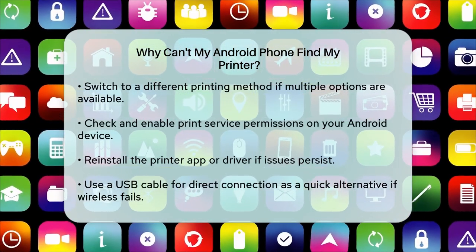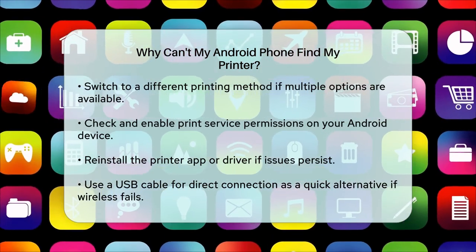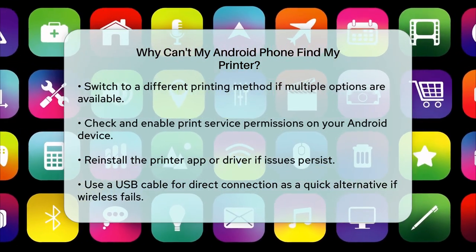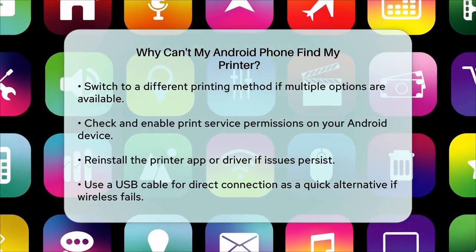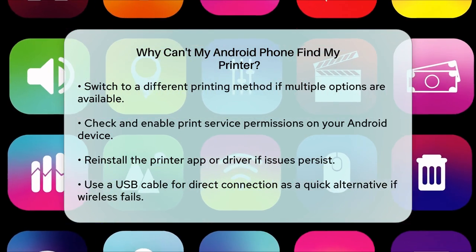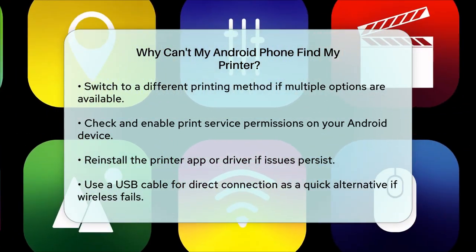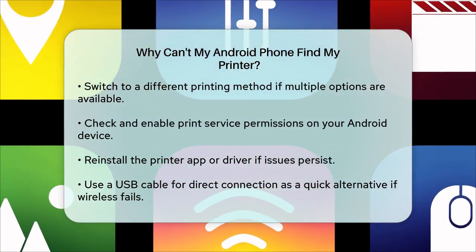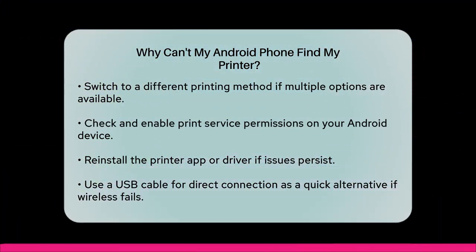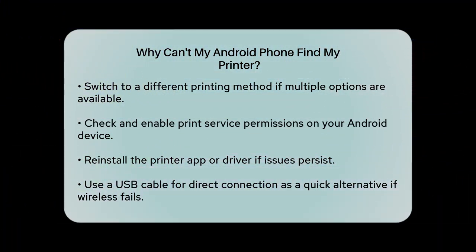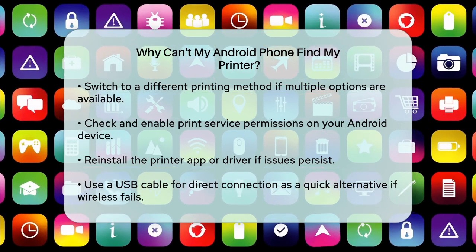Check for permission issues. Ensure that the print service is enabled on your Android device. Go to Settings, Connected Devices, Printing, and enable the toggle for your printer service if it is not already on.